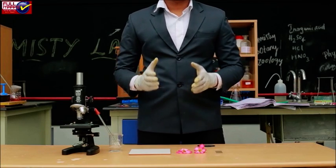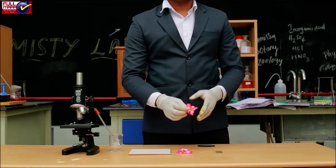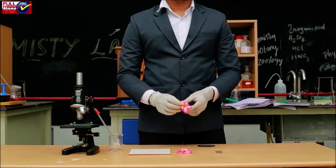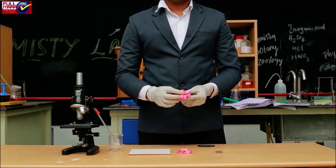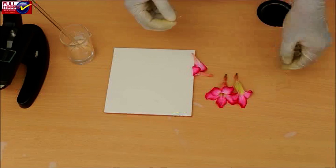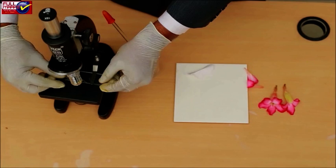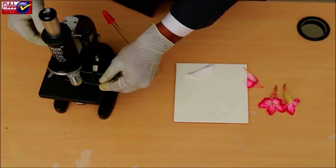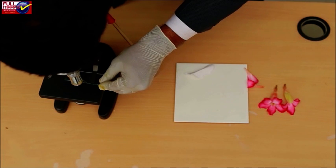Procedure: Take a flower of Bignonia. Observe and study the various parts of it. Dissect it out to see its male and female reproductive parts. Place the pollens on a drop of water on a slide. Now observe the prepared slides of pollen grains under a microscope to study its structure.